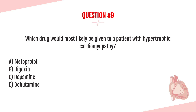Question number nine. Which drug would most likely be given to a patient with hypertrophic cardiomyopathy? A, metoprolol; B, digoxin; C, dopamine; or D, dobutamine? The answer is A, metoprolol. In hypertrophic cardiomyopathy, there is a problem with filling, and the goal is to slow down the heart rate and maximize ventricular filling. Since digoxin, dopamine, and dobutamine all have inotropic effects, they wouldn't serve our desired goal. We choose metoprolol to slow the heart rate and maximize filling time.